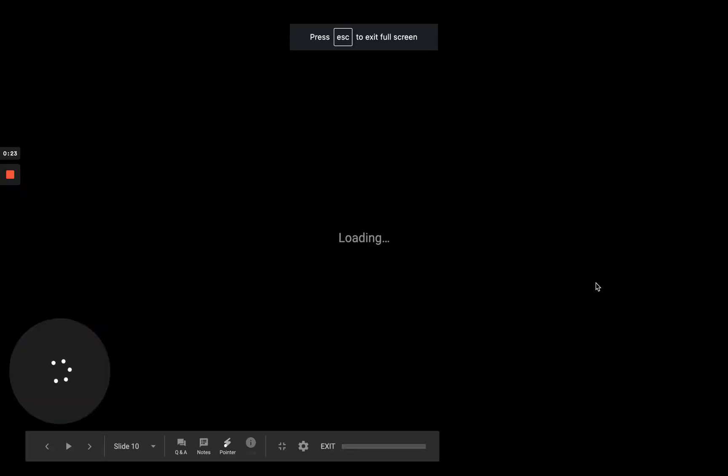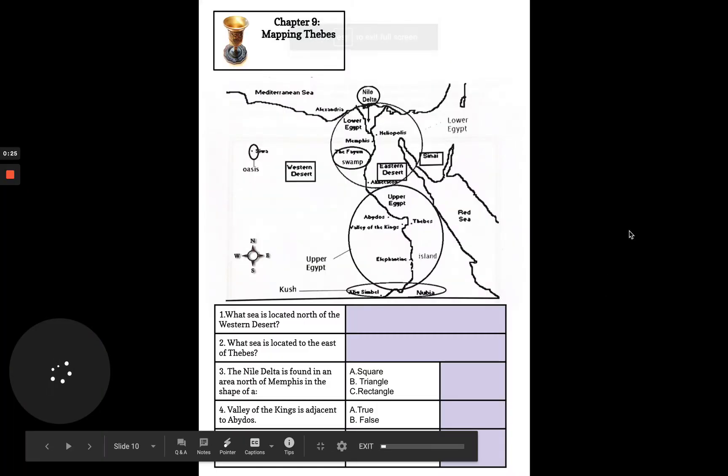So if you pull that up, you will come across this slide that looks just like this. It's entitled Chapter 9 Mapping Themes. Now the first thing I want you to take notice is, take a look at this map and identify the different locations.